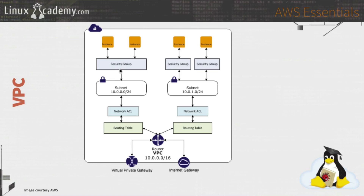Traffic flows through the subnet to our security group, which sits in front of our instances. Our security group has rules and is essentially a firewall for our instances — we can allow and deny traffic based on IP addresses. This is another layer of security. If all traffic is allowed through our network ACL and through our security group, it finally reaches our instance. So we have two layers of security for monitoring traffic in and out of our virtual private cloud.